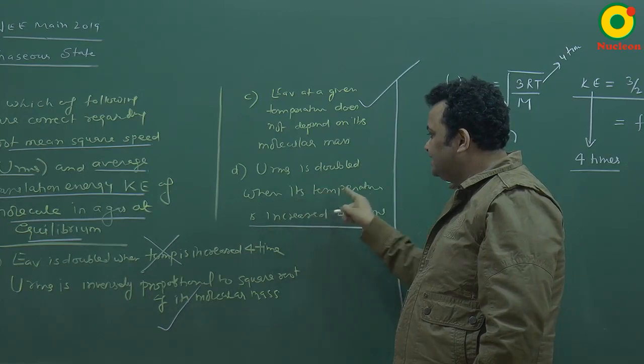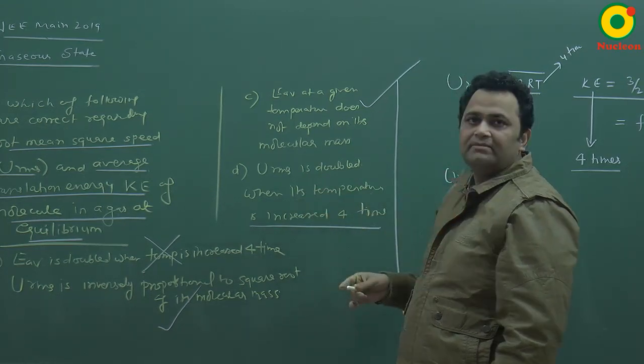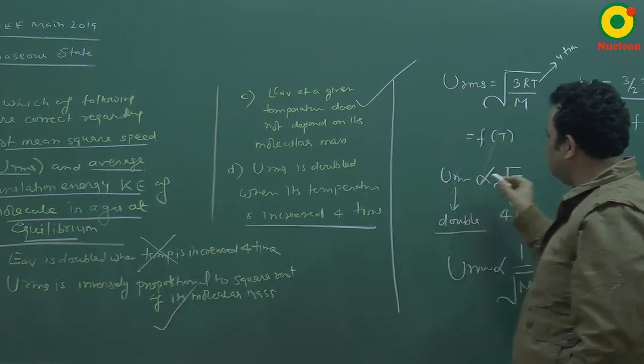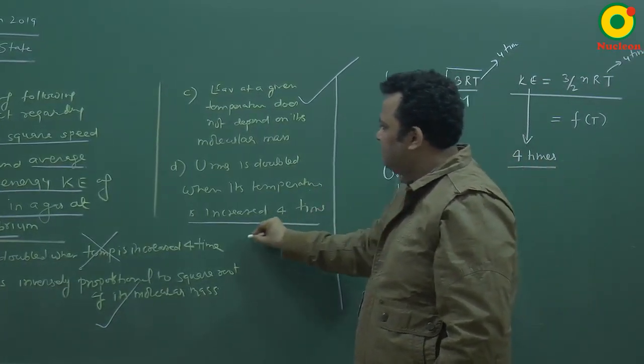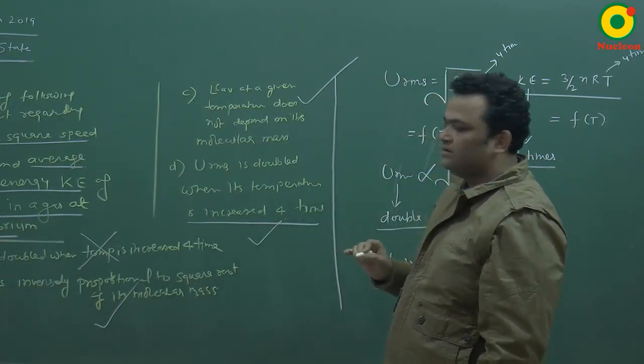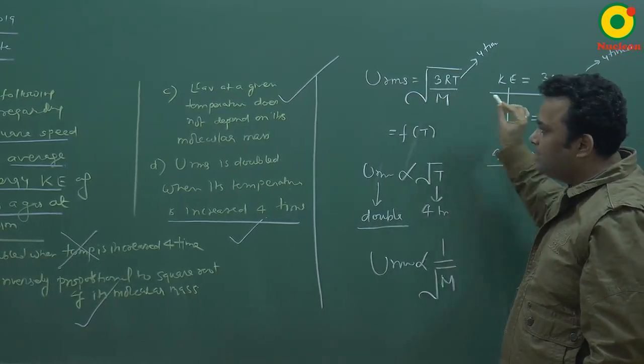URMS is doubled when its temperature is increased 4 times. So if I make it 4 times, it becomes double. So we have to keep this formula in mind.